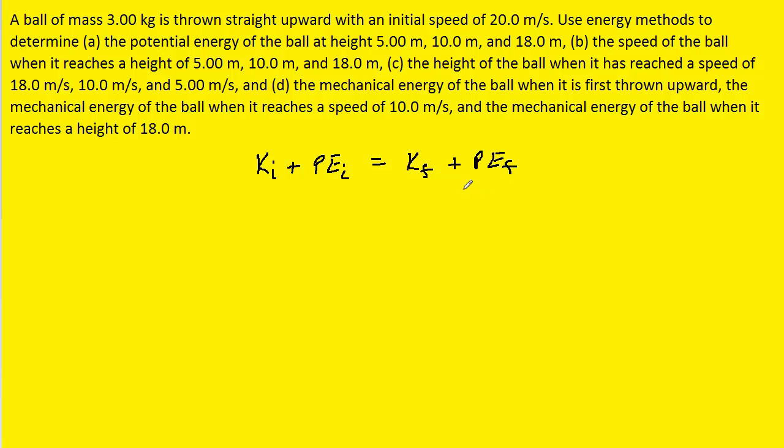Now, the ball is thrown with an initial height of 0 meters, so that means that its initial gravitational potential energy will actually be 0 as well.